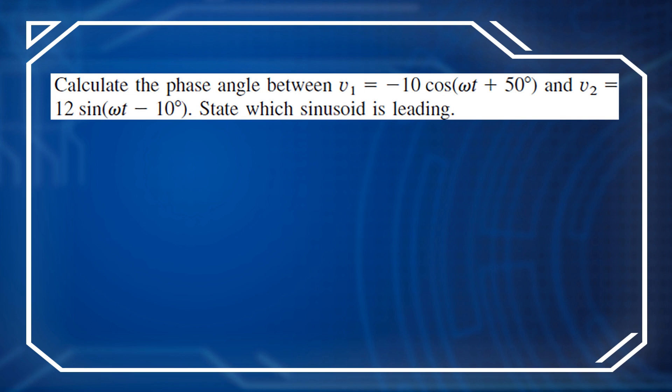We can solve this problem like this. First, you should notice v₁ is expressed in cosine. However, v₂ is expressed with sine. So if we want to compare the phase angle difference, we should make sure they are in the same form, sine or cosine. So we can transform both voltages to cosine with positive amplitude.